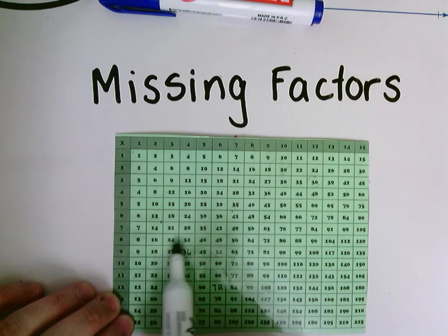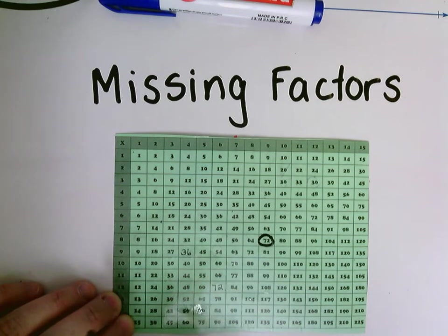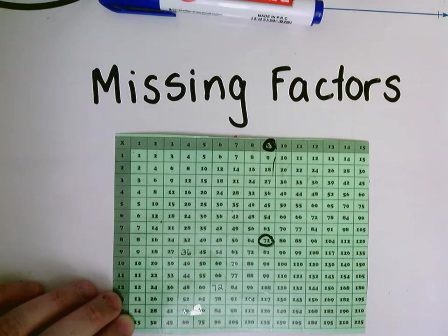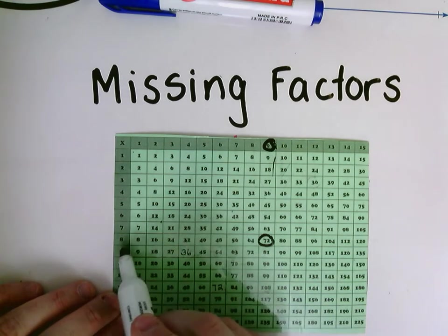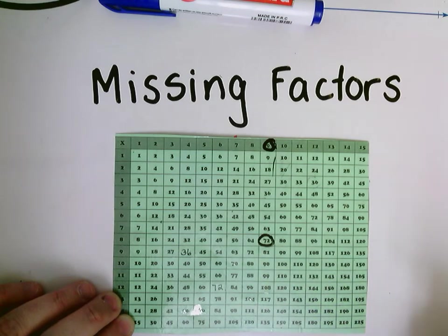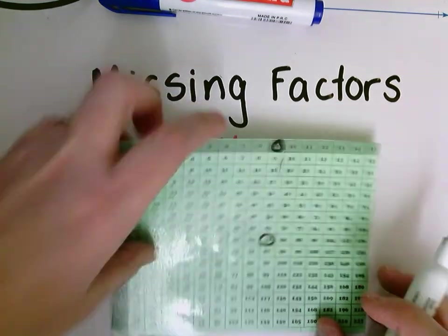I would move across my multiplication chart until I got to 72. There it is. And then I'm going to look up, and I see, oh okay, so eight times nine is 72. That's how I can solve it when I'm looking for a missing factor on my multiplication chart.